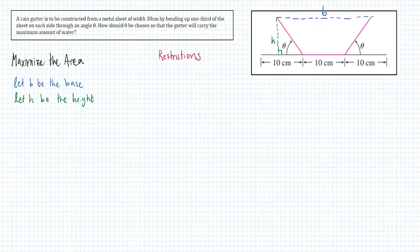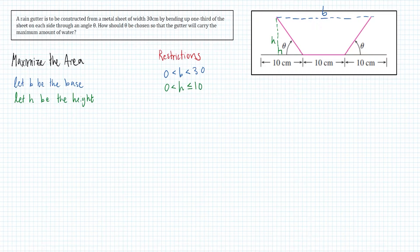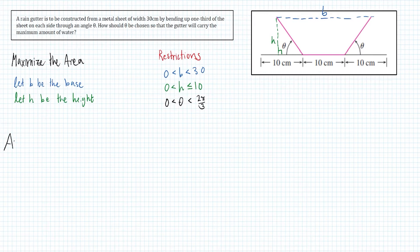For b, it would be greater than zero and less than 30. When it's almost straight, h would be greater than zero and less than or equal to 10 when theta is 90 degrees. Theta would be greater than zero and less than 2 pi over 3, when the sides almost touch at the middle to create an equilateral triangle. The area of this is the same as the area of a trapezoid.